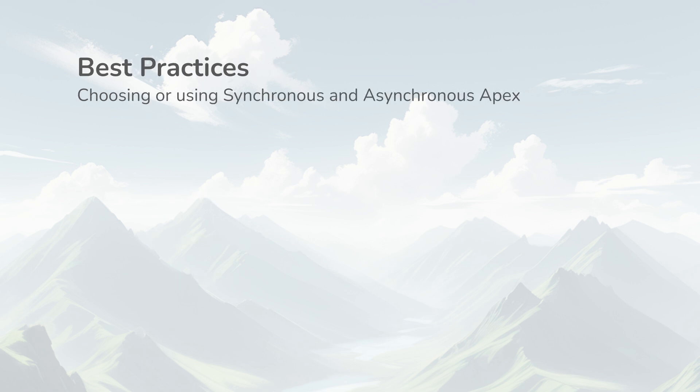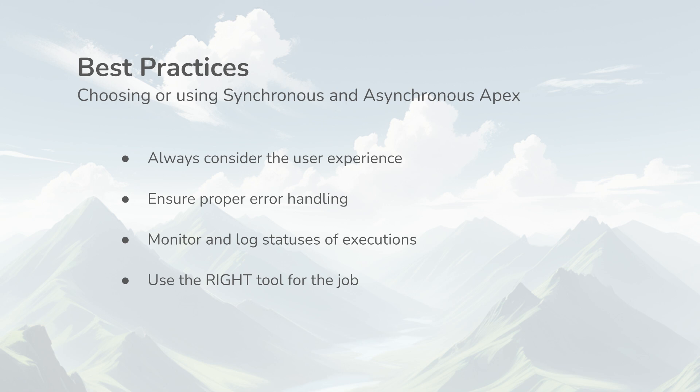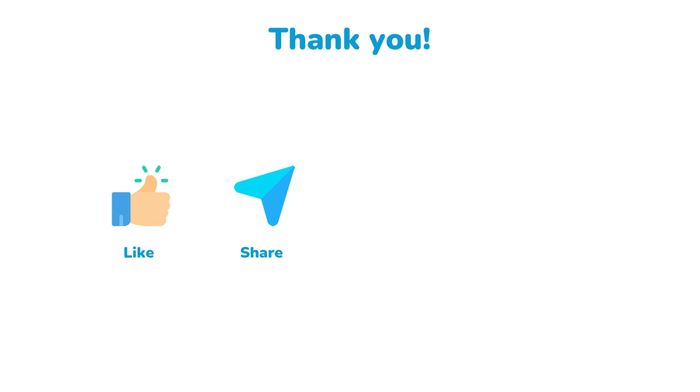Before we wrap up, here are some best practices for using synchronous and asynchronous Apex: Always consider the user experience and minimize wait times wherever possible. Ensure proper error handling, especially for asynchronous processes. Monitor and log the status of asynchronous jobs to troubleshoot issues. Use the right tool for the job — choose Future Methods, Batch Apex, Queueable Apex, or Scheduled Apex based on your specific needs. If you like this video, please like and share, and hit the subscribe button for more informative content.